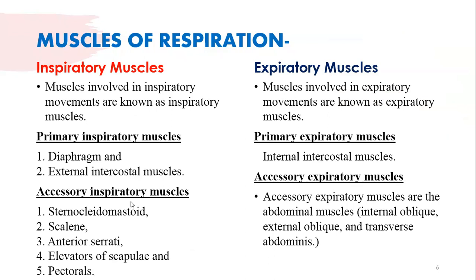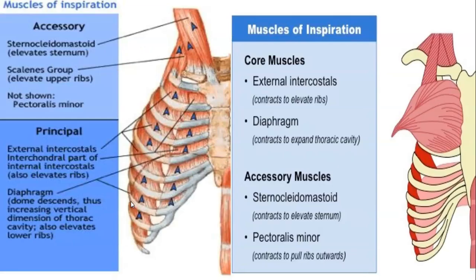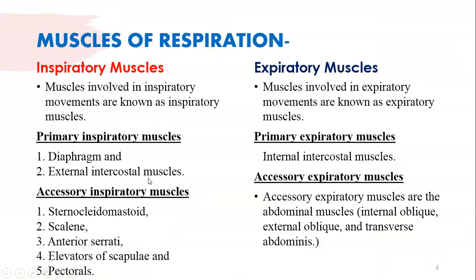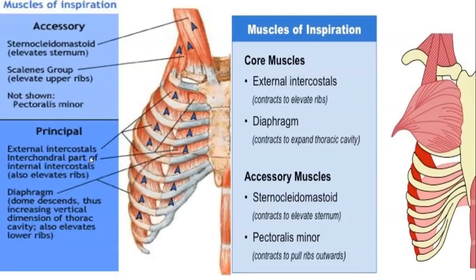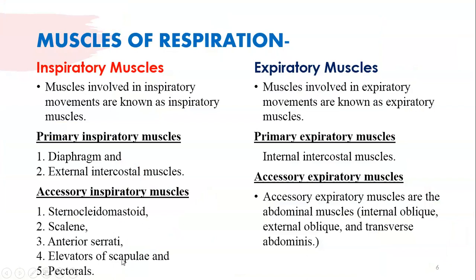For inspiration, the primary muscles are the diaphragm and external intercostal muscles. Accessory muscles for inspiration include sternocleidomastoid, scalene, serratus anterior, and pectorals. You can see the pectoralis major, sternocleidomastoid, serratus anterior, and scapular muscles — these are the accessory inspiratory muscles.